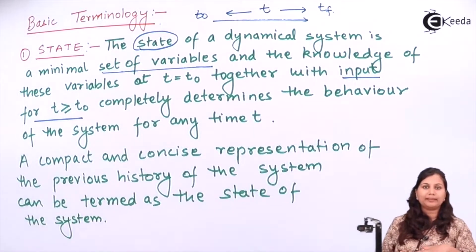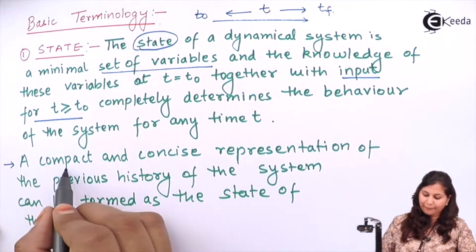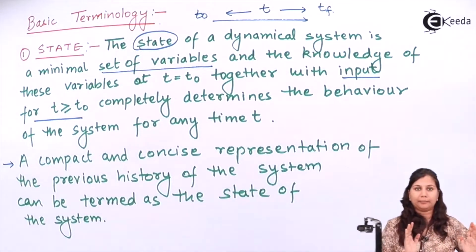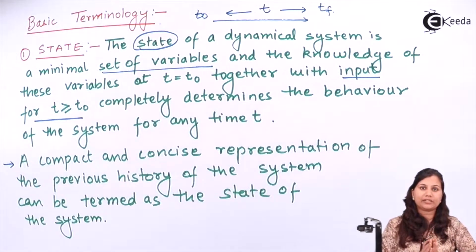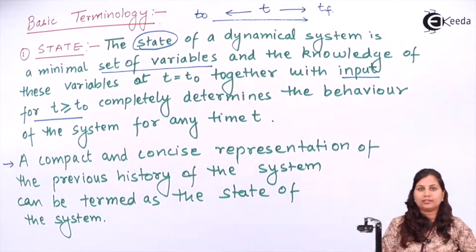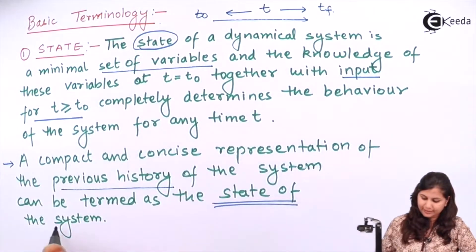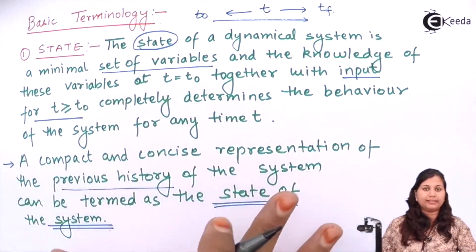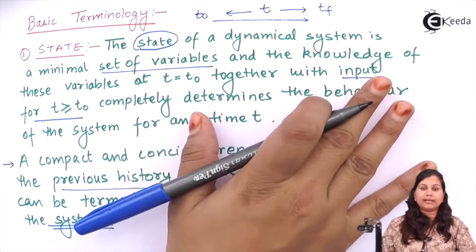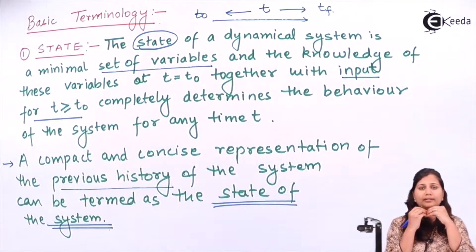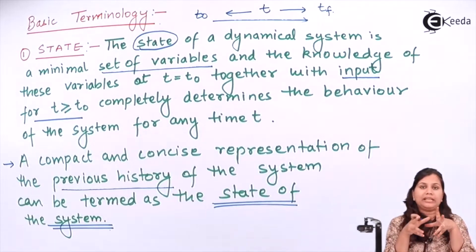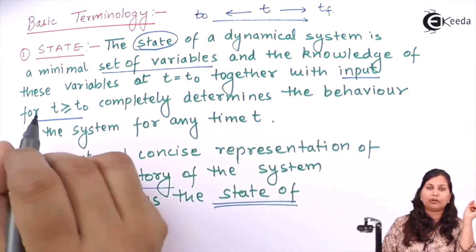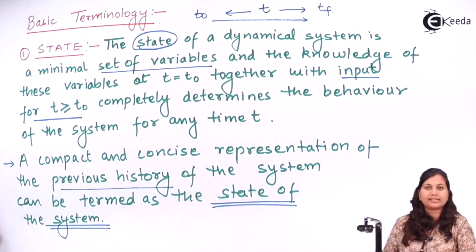Simply put, the state is a compact and concise representation of the previous history of the system. Previous history can be termed as the state of the system. So the state of a dynamical system is a minimum set of variables which are essential for defining the behavior of the system, and knowledge of these variables at t0 together with the input for t greater than or equals to t0 defines the state of the system.